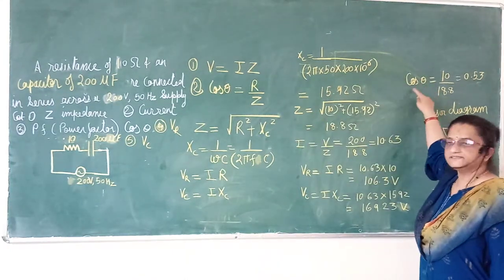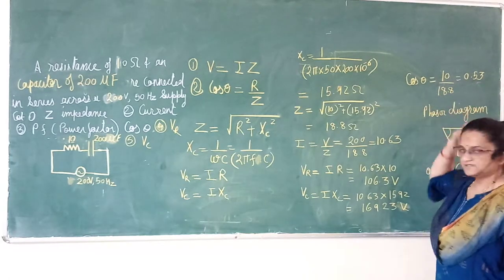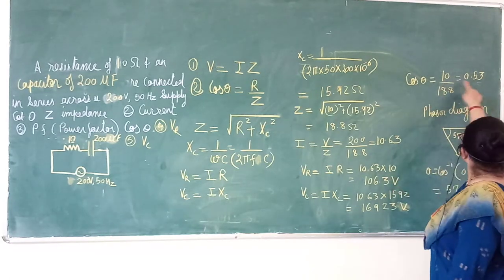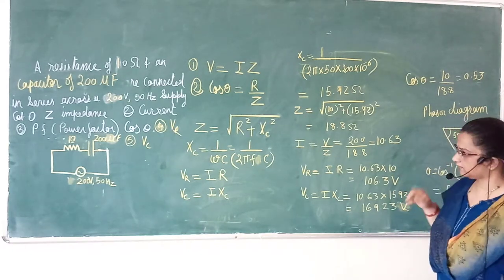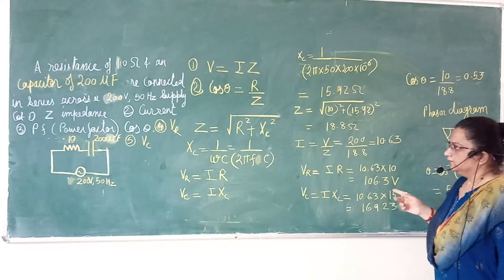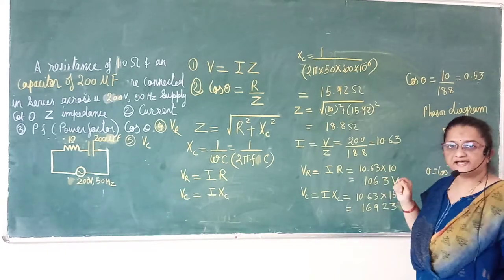Cos theta is 10 upon 18.8, meaning R upon Z. The value is 0.53. Now, draw the phasor diagram.